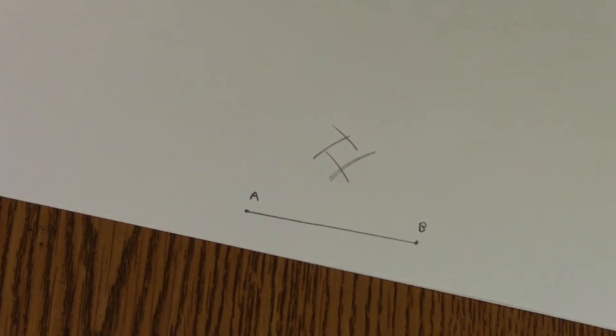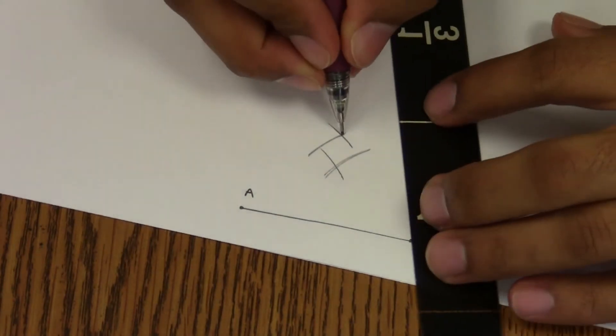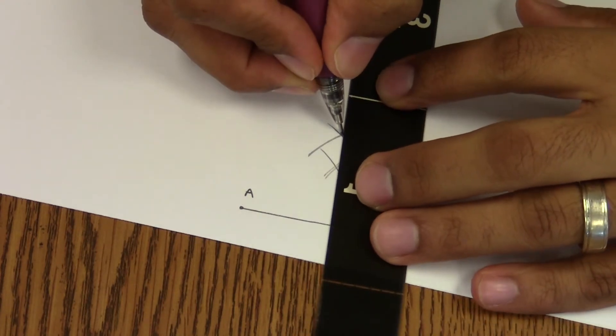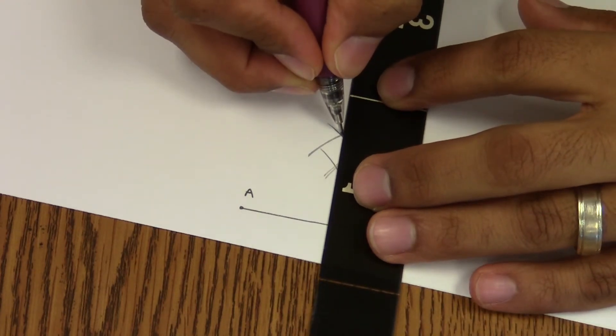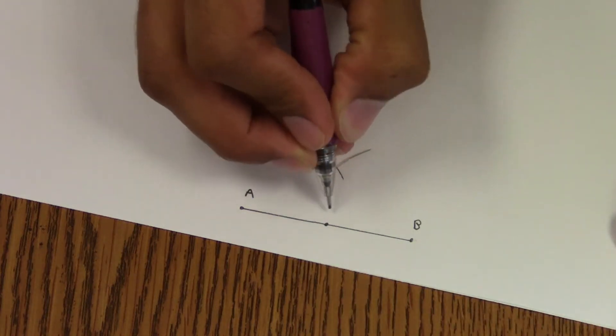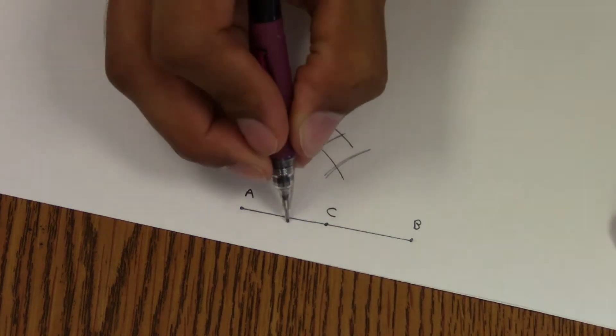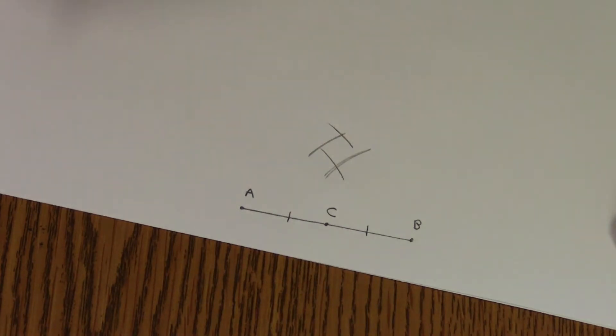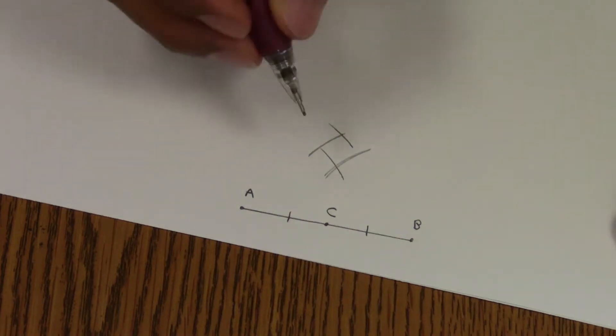Same rules still apply. You still just match up where your arcs intercept. You'll mark off your line segment, and in this case, this is my midpoint. So that's another way you can find the midpoint.